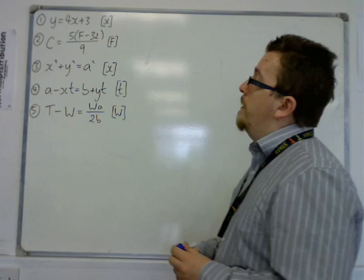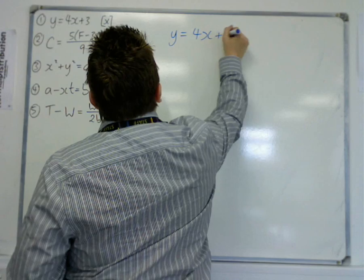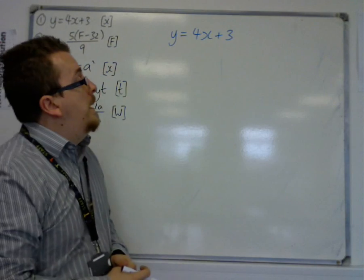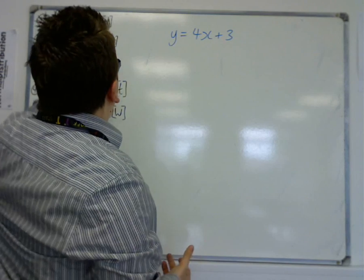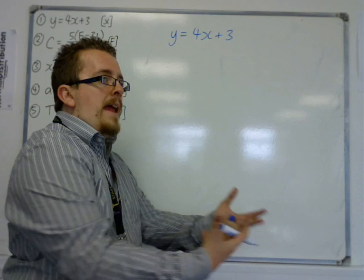So, the first one, nice and straightforward, is just a linear equation. It's about a linear identity here, y equals 4x plus 3, and what I want to do is I want to make x the subject of the formula. So, I need to get x equals.